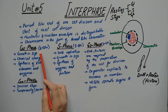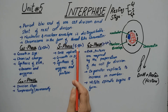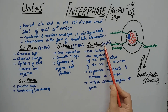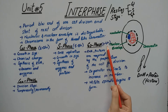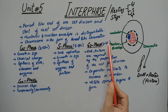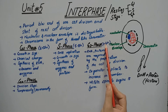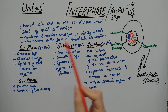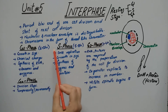Regarding time durations: G1 phase continues for about 6–12 hours, S phase lasts about 5–8 hours, and G2 phase lasts about 2–5 hours — making G2 the smallest phase. Note that these are not standard time durations; depending on the type of cell, the duration differs.